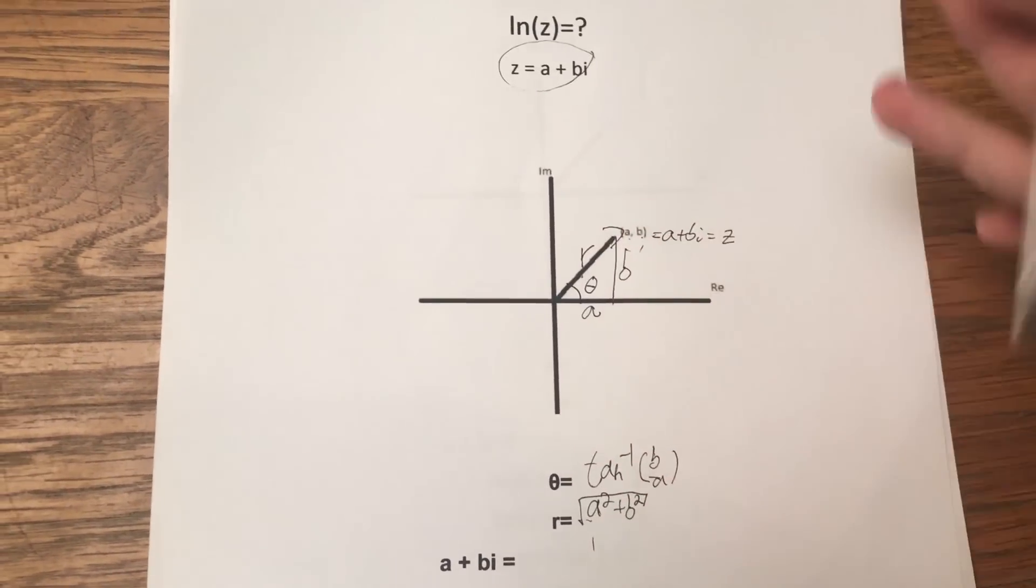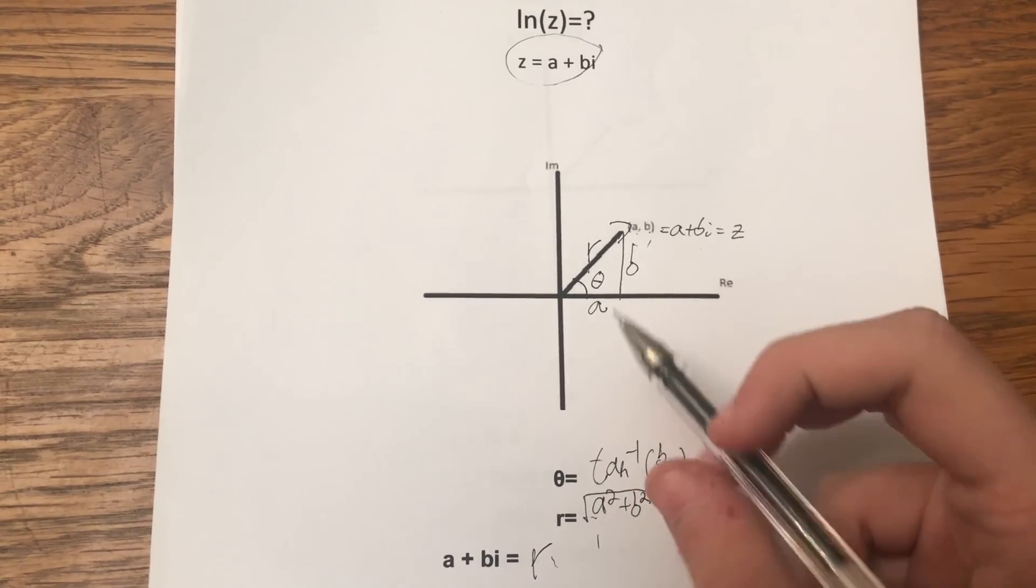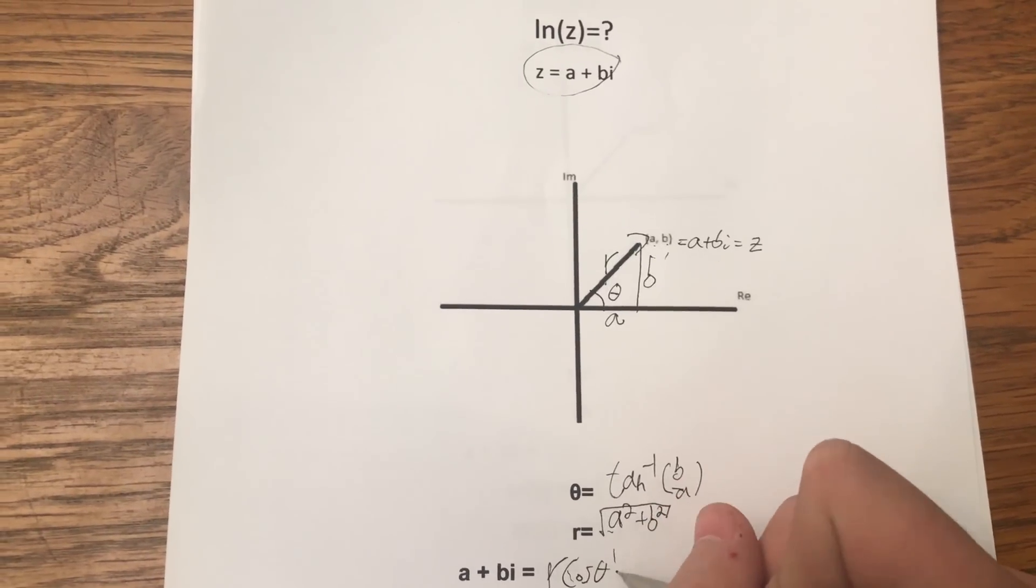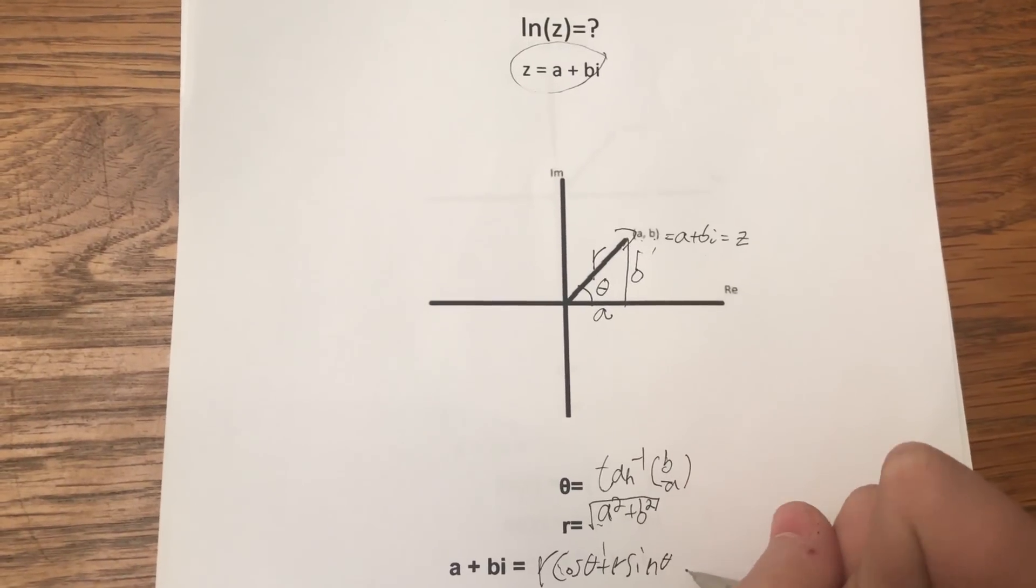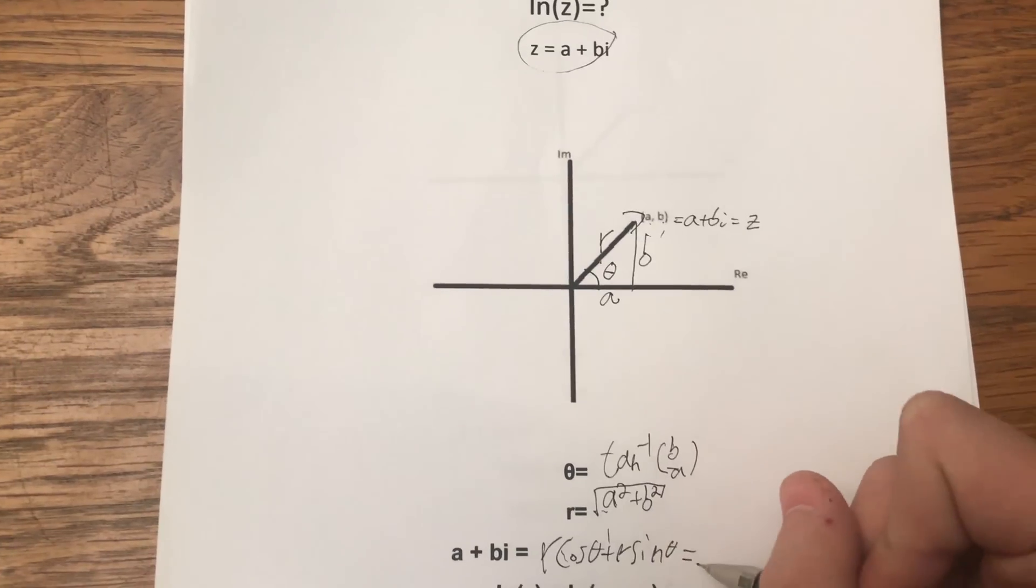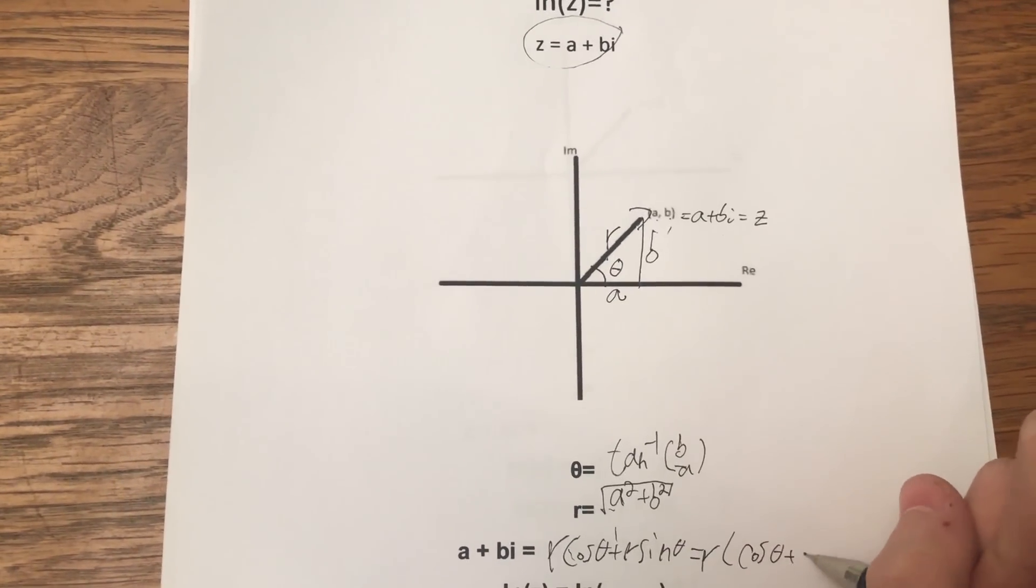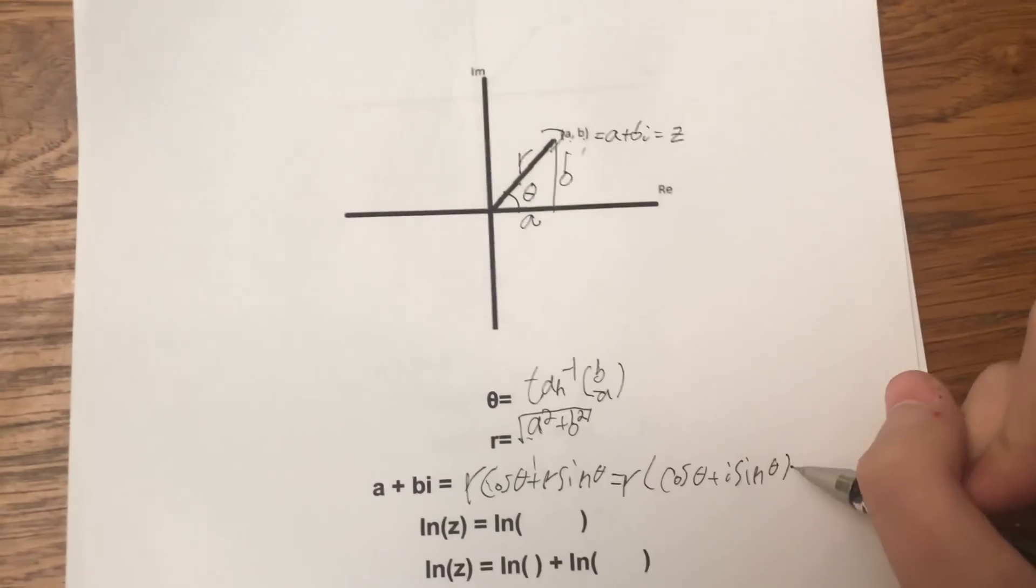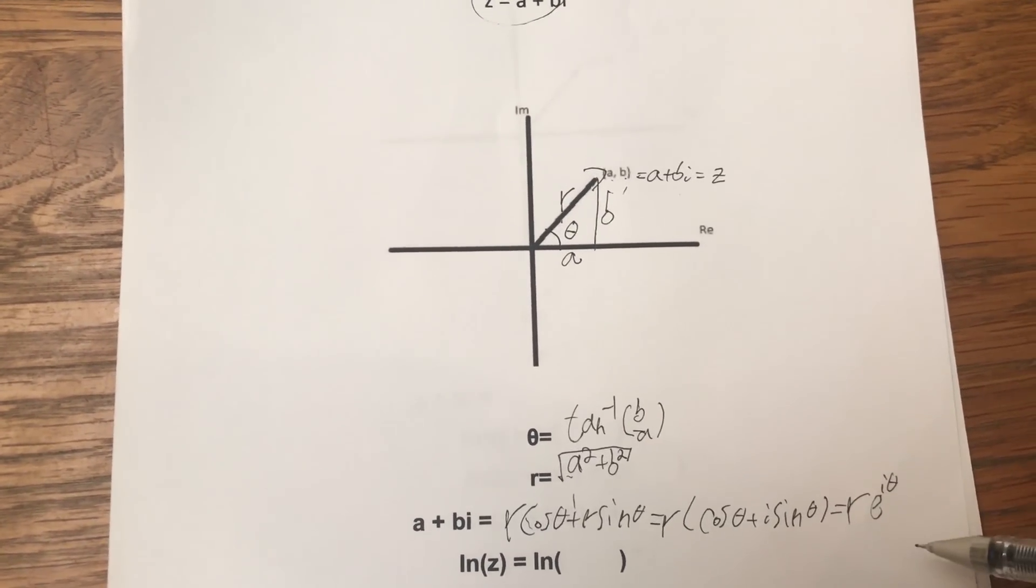So we can rewrite our complex number a plus bi as r times cosine theta plus r times sine theta. Now, before we go back to our logarithm, I'm gonna factor out r to get cosine theta plus i sine theta, which is of course by Euler's formula, r e to the i theta. So beautiful, isn't it?